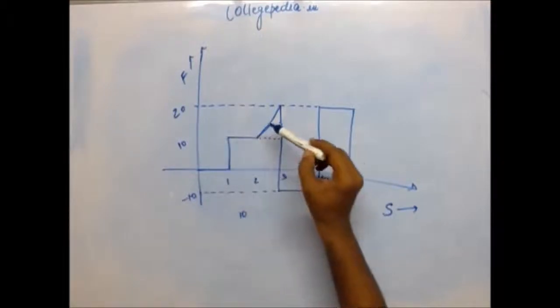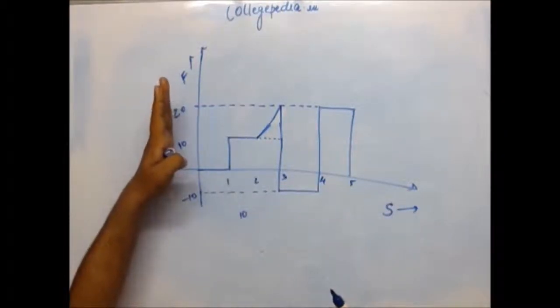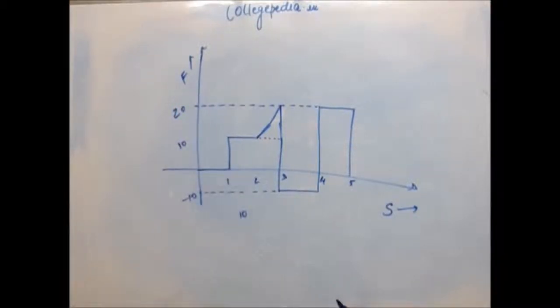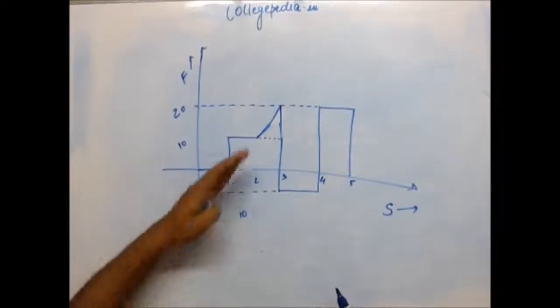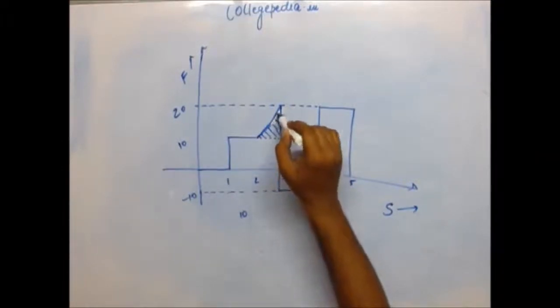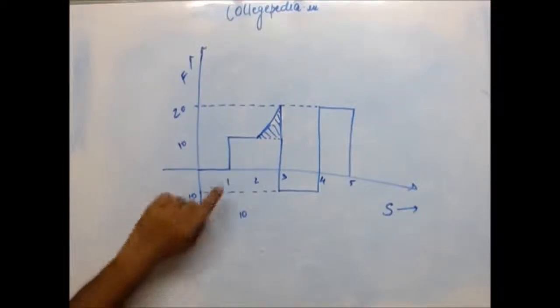Area under the curve, meaning the area under the curve of force versus displacement graph, gives us work done. Now I will tell you how, after once we solve this. I will give you the explanation why the area under the curve, why this area, whatever this area is, that will be equal to work done. We will have a discussion on this, but for time being let us consider whatever I am saying is true and on that assumption let us solve this.